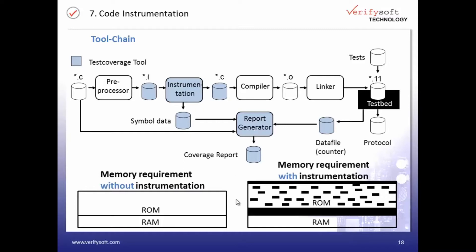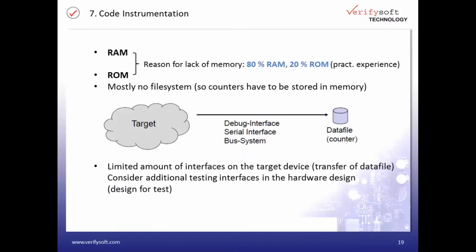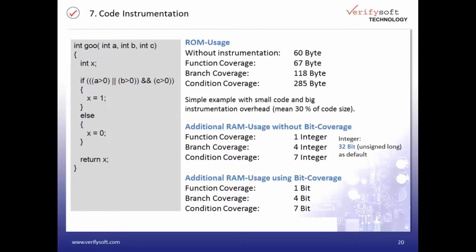The challenge is that instrumentation needs additional memory — additional RAM and ROM. From our experience, the reason for lack of memory is in most cases the RAM. However, compared to other test coverage tools, Testwell CTC++ requires very, very low supplementary memory. And if your available memory space is still too low, you can use the bit coverage add-on for CTC++. With this add-on, we don't count how many times a piece of code is executed — we only record if it is executed or not. The bit coverage add-on reduces the needed RAM by a factor of 32.